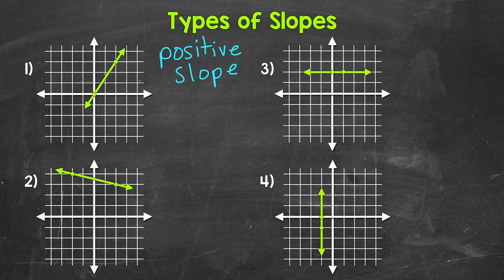When finding slope, we use any two points on a line and see how far up and over we go. We're going to use these two points, working from the left point to the right point. Starting with the rise — the vertical change — we go up one unit, two units, three units, and now we are aligned with the other point. So our rise is positive three, because we went up.